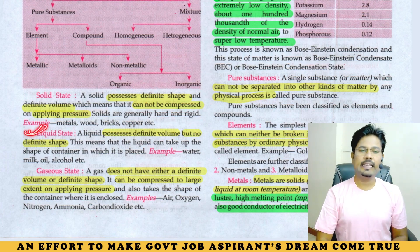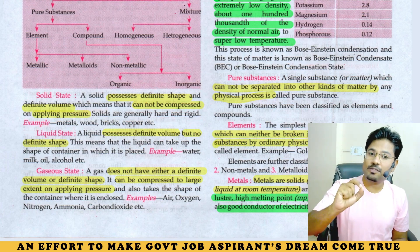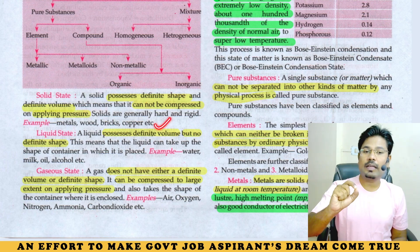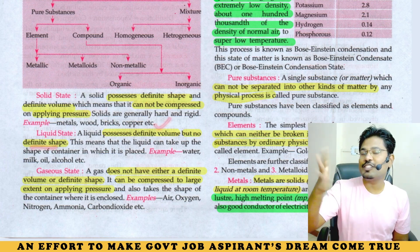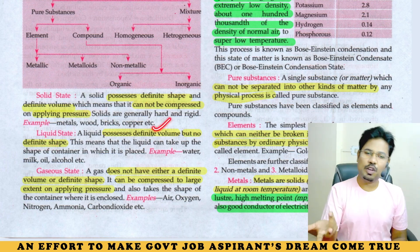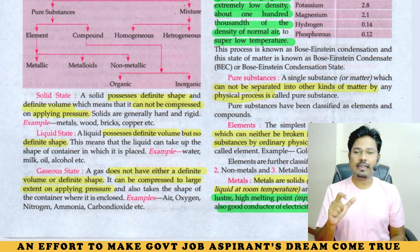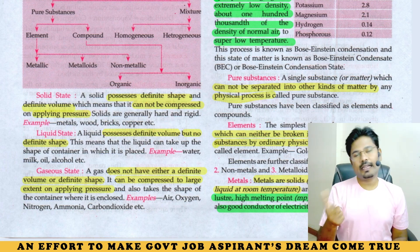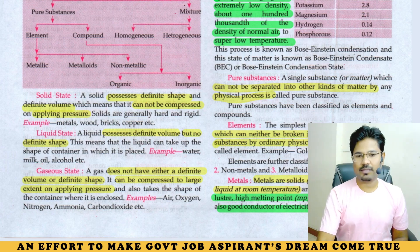Liquid state: liquids possess volume but they do not possess a definite shape. They take the shape of the container they are placed in. Examples: water, milk, alcohol.